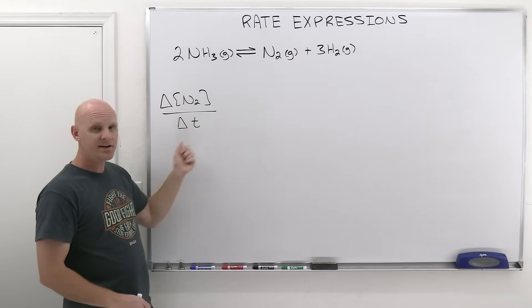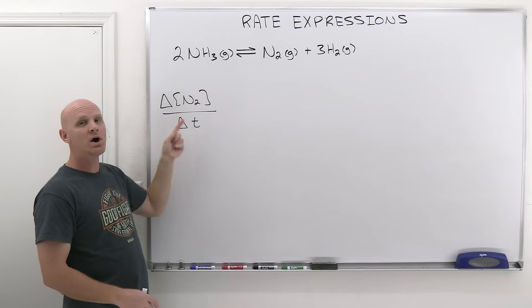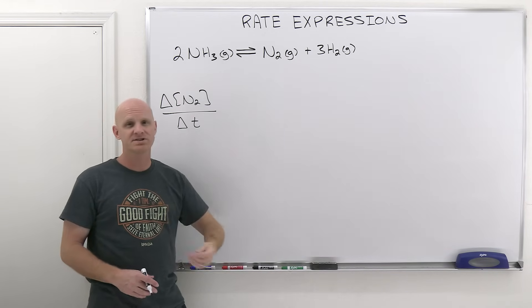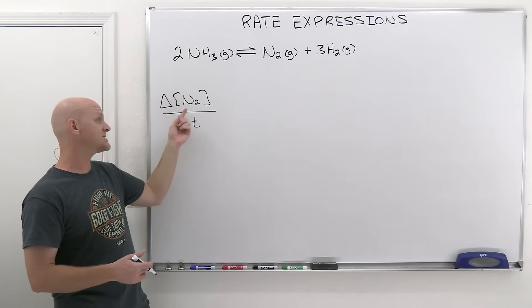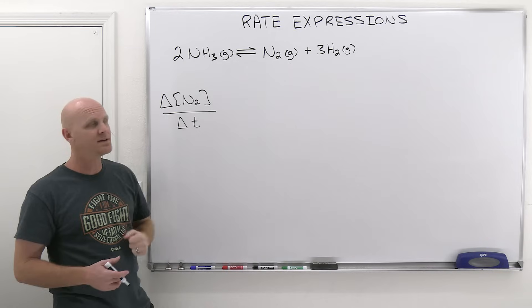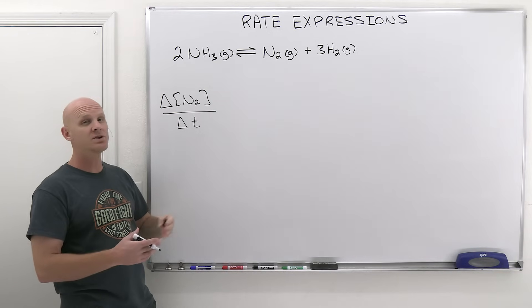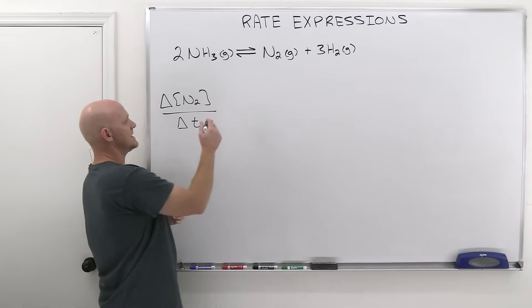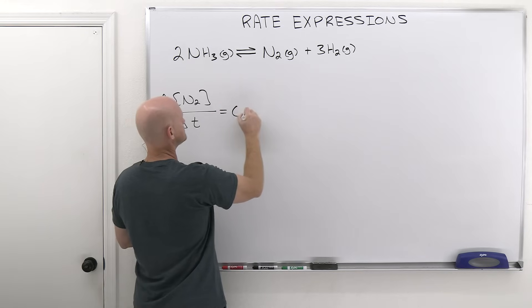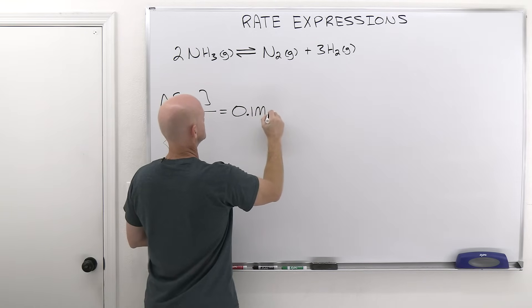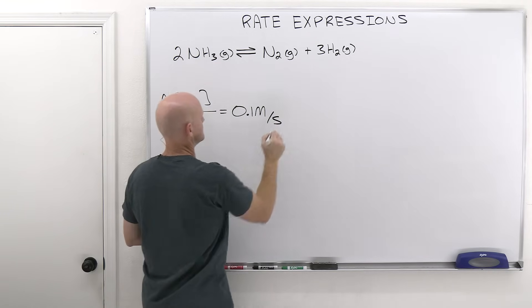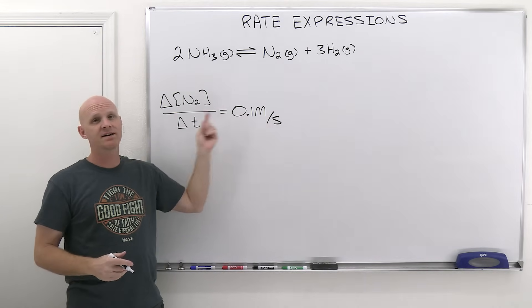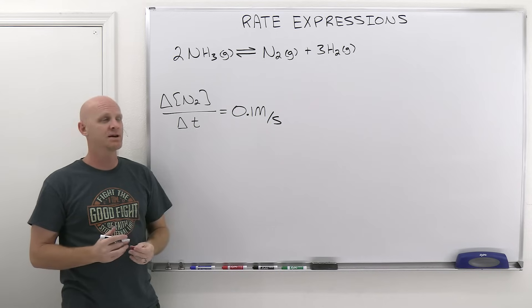So this rate here is expressed in units of molarity over time. That could be molarity per minute, molarity per second, those are the most common. Technically it doesn't have to be molarity, but it's going to be exclusively in this chapter. Our brackets here definitely mean molarity. So in this case, the rate here is 0.1 molar per second at which N2 is being produced.